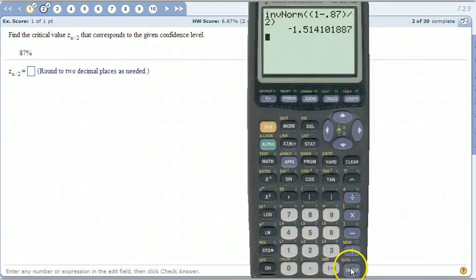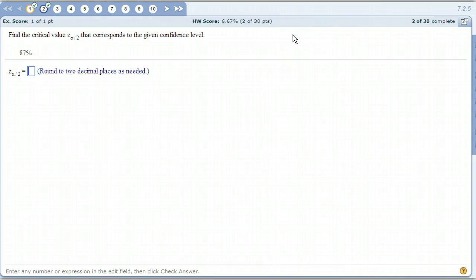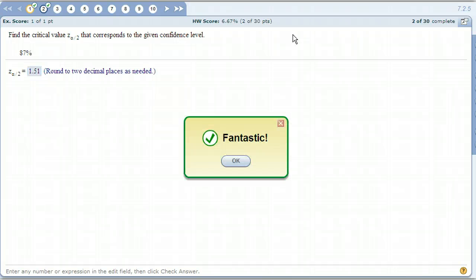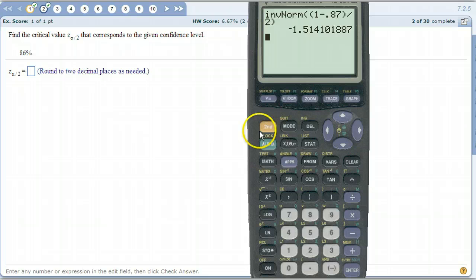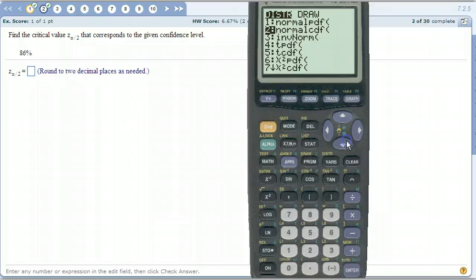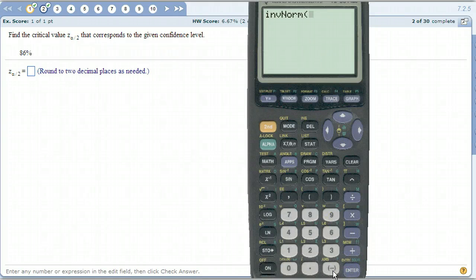There's our number. 1.51 to 2 decimal places. Don't worry about that sign. One more time. 86. So inverse norm. Parenthesis 1 minus 0.86. That's alpha. And then divide that by 2.